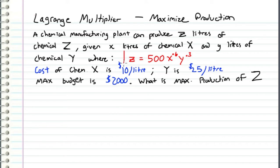So the function that we want to maximize is going to be this function z. And our constraint is going to use this information right here. So we can write the constraint equation as g of x,y is equal to $2,000 which equals 10x plus 25y.